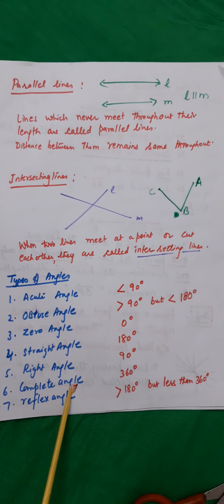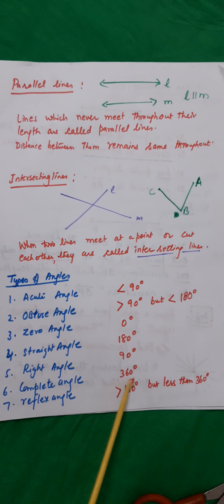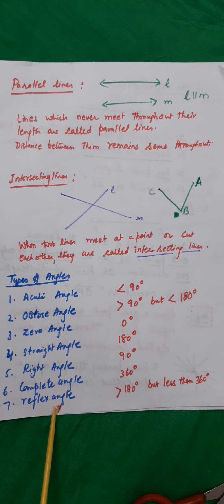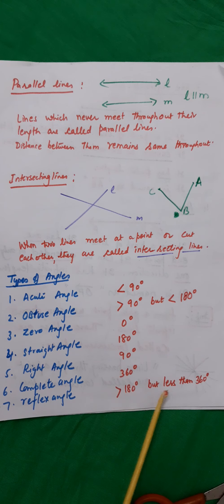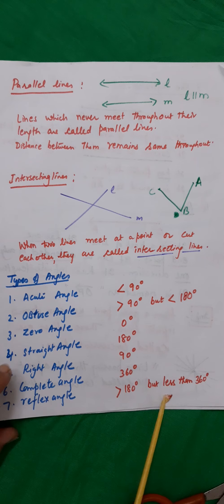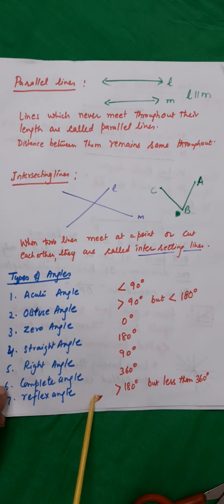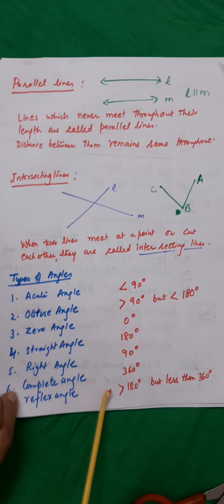A complete angle means 360 degrees. Reflex angle — the angle whose measure is greater than 180 degrees but less than 360 degrees is called a reflex angle.